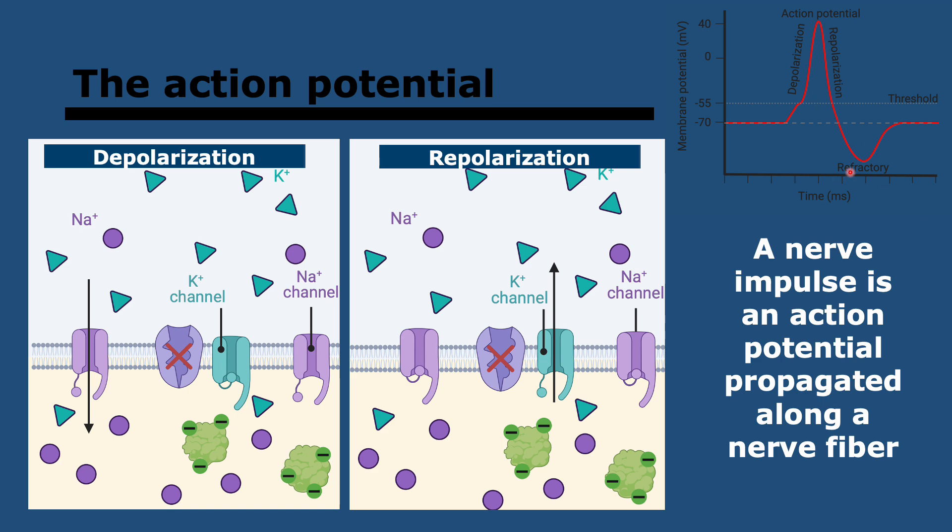However, as you can see, it goes back down more than it was initially. So then there's a period called the refractory period, where you basically need the sodium-potassium pump to reestablish the potential of minus 70. Think of it as a whole. During resting, the sodium-potassium pump pumps sodium out and potassium in. Then during depolarization, the sodium comes back in. During repolarization, the potassium goes back out and then the sodium-potassium pump reverses it to bring it back to normal.